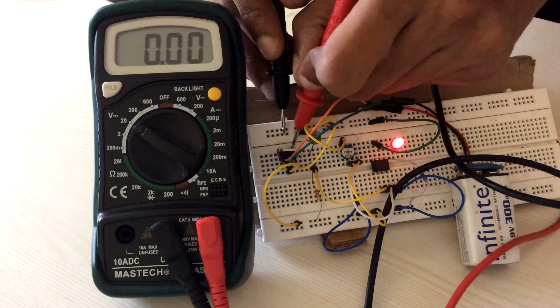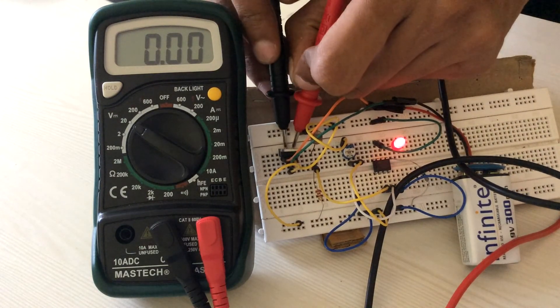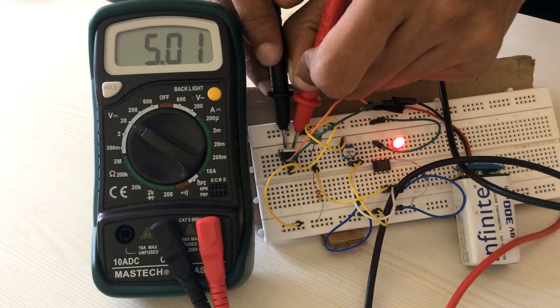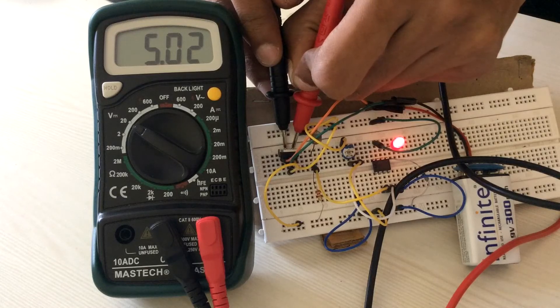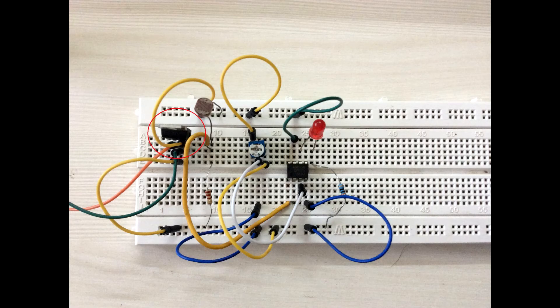Then see if 7805 is providing an output voltage of 5V by connecting it across the second and third pins. If yes, there is no problem with 7805. If there is a problem, you have to replace 7805. While replacing any components, make sure that your power supply is turned off.